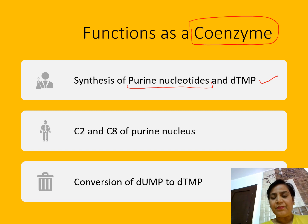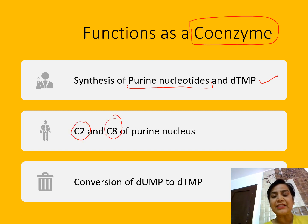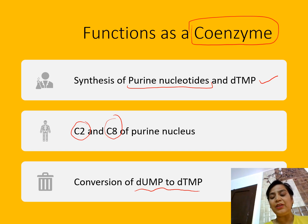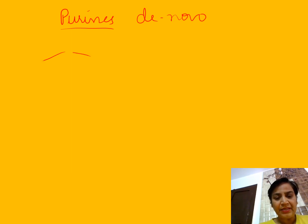Purines are always synthesized by a de novo pathway — a novel, a new pathway. C2 and C8 of the purine nucleus comes from folate. Similarly, folic acid is required for the conversion of UMP to TMP, which is very important. We are going to take how these purine nucleotides are synthesized. Purines have this type of structure with numbering beginning from position 1 through 9.